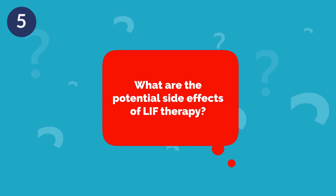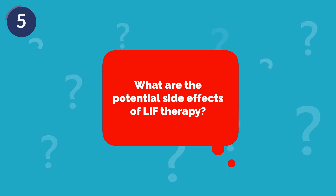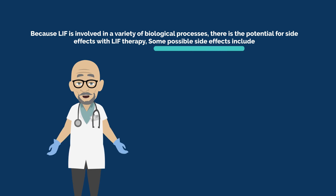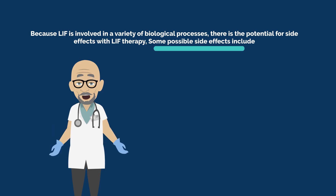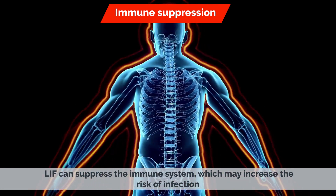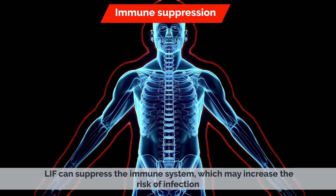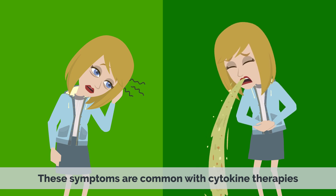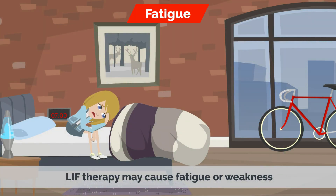What are the potential side effects of LIF therapy? Because LIF is involved in a variety of biological processes, there is the potential for side effects. These may include immune suppression, as LIF can suppress the immune system and increase the risk of infection; nausea and vomiting, which are common with cytokine therapies; and fatigue or weakness.